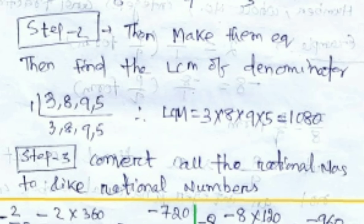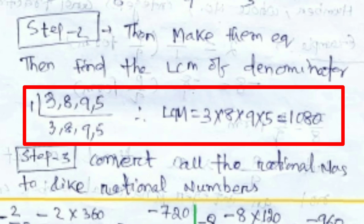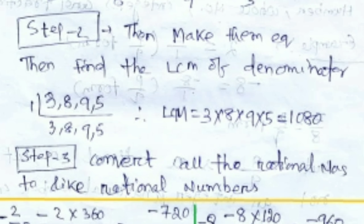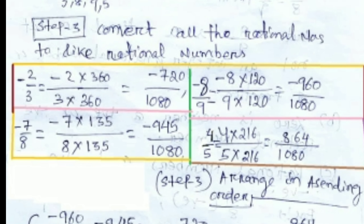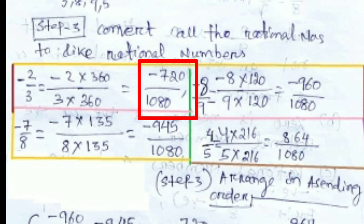We are taking the LCM of 3, 8, 9, and 5. The LCM of 3, 8, 9, 5 is 1080. We now convert all rational numbers into like rational numbers. For minus 2 by 3, we multiply 360 in the denominator to get 1080, so we also multiply 360 in the numerator. That gives us minus 720 by 1080.